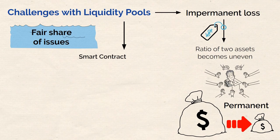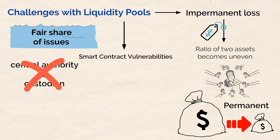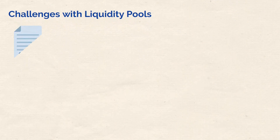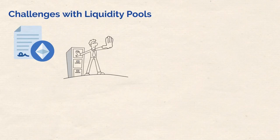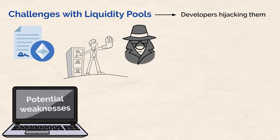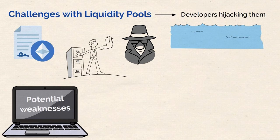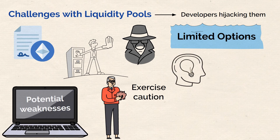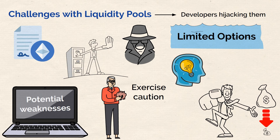Another problem is smart contract vulnerabilities. Smart contracts govern pool assets with no central authority or custodian responsible. This means that if a vulnerability exists, assets could be lost permanently. Conducting smart contract audits is a reliable way to help strengthen security against cyber threats, though it does involve closely examining the source code to detect potential weaknesses. The last problem is the issue of developers hijacking liquidity pools. In centralized liquidity pools, a developer may take control of the pool, leaving liquidity providers with limited options. Just as when investing in traditional assets, it is crucial to exercise caution when selecting a liquidity pool and conduct appropriate due diligence before depositing funds to avoid fraudulent projects.